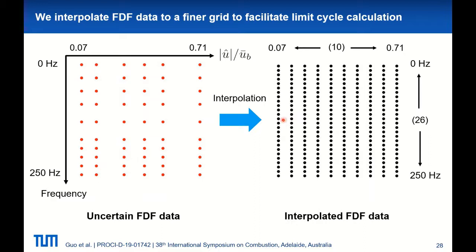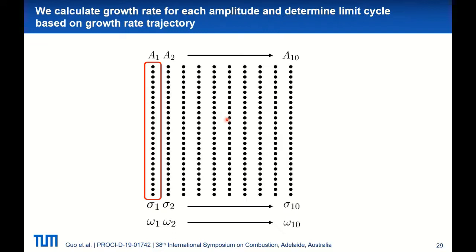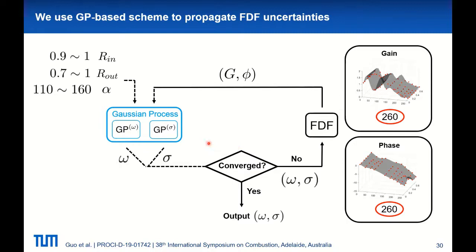To facilitate limit cycle prediction, we need to interpolate those data to a finer grid — in our current study, 10 levels of amplitude and 26 levels of frequency. Since those data are uncertain, when we do the interpolation, all 260 data points for gain and another 260 points for phase are all uncertain. Our goal is to propagate those uncertain FDF datasets to the limit cycle calculations. For each FDF realization, we calculate the mode frequency and growth rate for each amplitude level, using MATLAB rational fit to approximate the discrete frequency response data. This gives us the flame model we need. Based on the obtained trajectory of the growth rate, we can determine when the limit cycle happens, and we use the corresponding mode frequency and acoustic perturbation amplitude as the limit cycle frequency and amplitude.